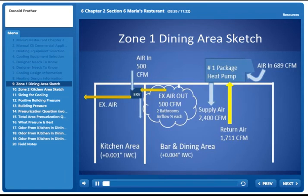Here's a sketch of Zone 1, the dining area. In this sketch, we have a package heat pump unit on a rooftop bringing about 689 CFM of outside air all the time. The supply air is constantly 2,400 CFM.